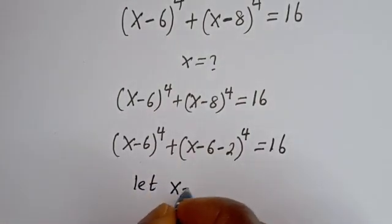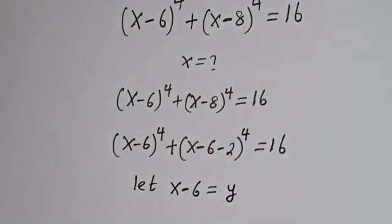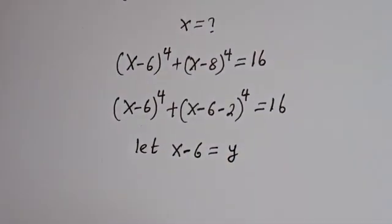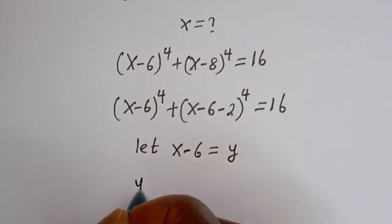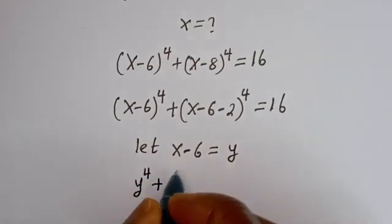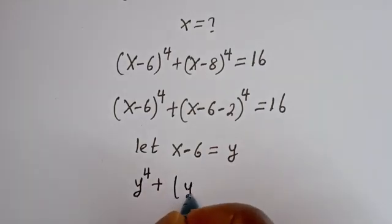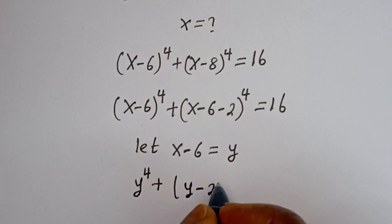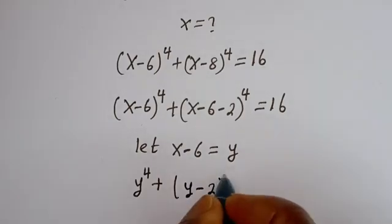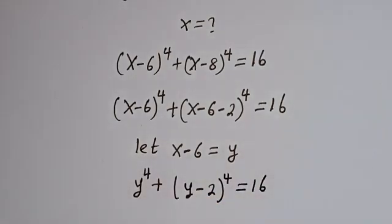Let x minus 6 equal to y. Then we have y to the power of 4 plus (y minus 2) to the power of 4 is equal to 16.